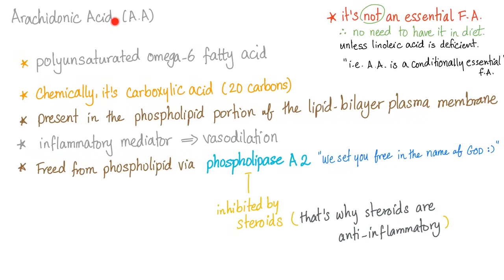The arachidonic acid, which comes from the phospholipids of the lipid bilayer plasma membrane, is a polyunsaturated omega-6 fatty acid. Chemically, it's a carboxylic acid with 20 carbons, present in the phospholipid portion of the lipid bilayer plasma membrane.